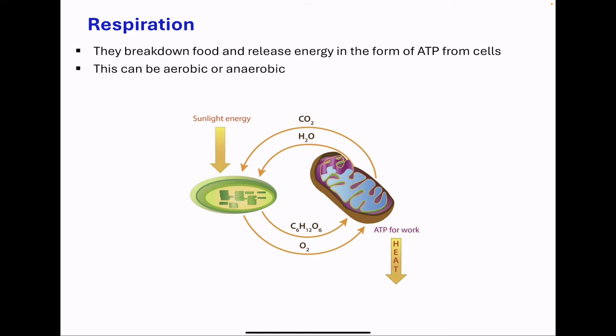Going to respiration, all living things carry out respiration, which is the breakdown of food particles in order to release energy in the form of ATP from cells. Respiration can be aerobic or anaerobic. In plants, the food substances made in the chloroplast are transported into the mitochondrion, where respiration takes place, generating ATP, and this is used for cellular processes.